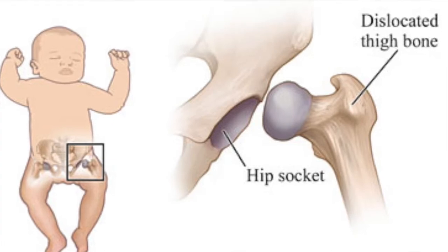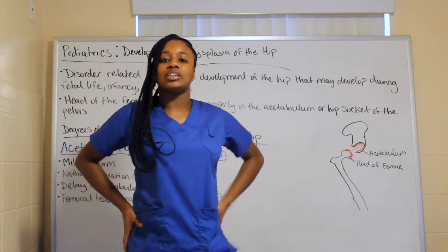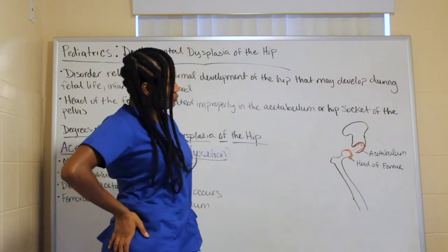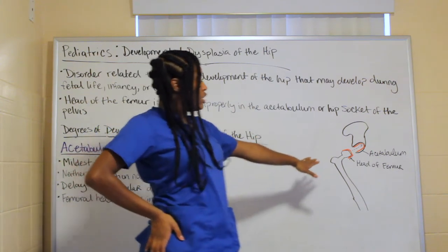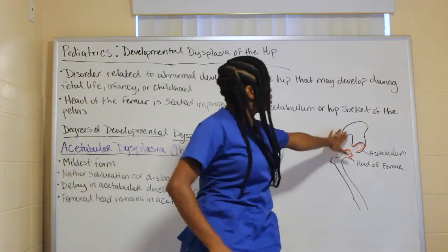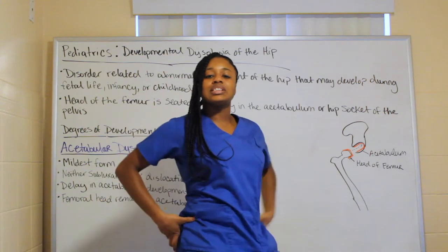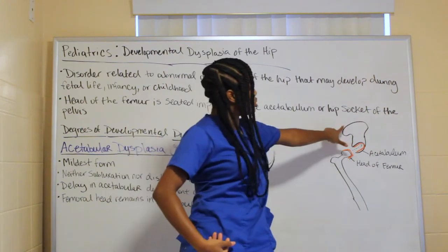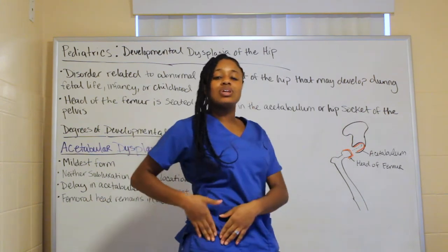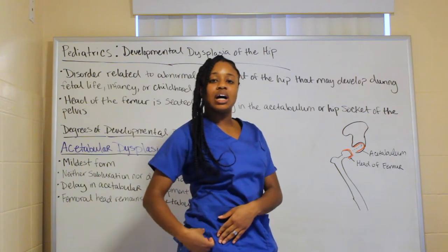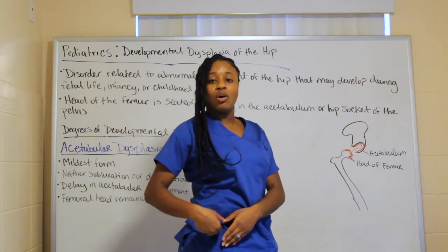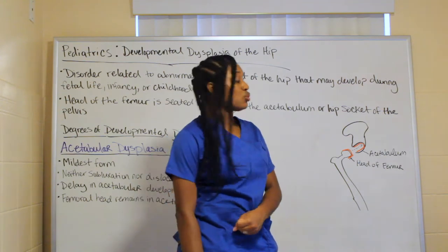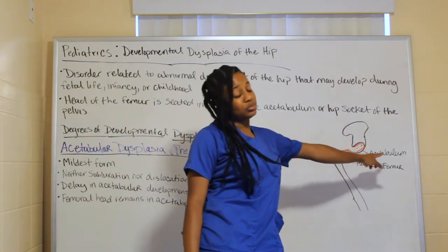Later on this is going to cause problems with balance and walking. The hip in this area — the bone in this region is the pelvis. You have the ilium up here at the top, and then there's an opening or indentation where something else is joined — that is your acetabulum.